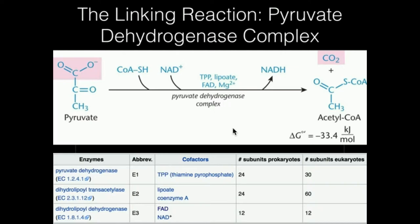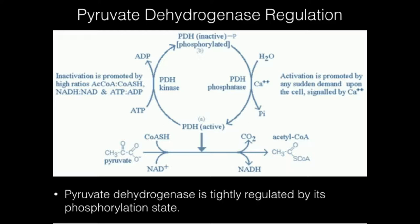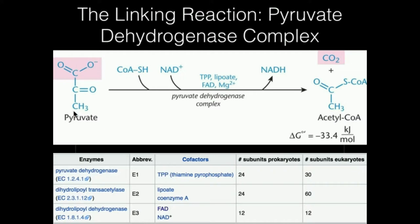It turns out that pyruvate dehydrogenase is both allosterically regulated and covalently regulated. The allosteric regulation we'll talk about in another video. We're going to talk only about the covalent regulation here. But first I want to mention why the logic makes sense to very tightly regulate this particular enzyme. You're generating the central coenzyme acetyl-CoA. Acetyl-CoA has many different fates — the obvious fate is that it's used in the TCA cycle, but there are also other reactions such as ketone body synthesis, steroid synthesis, and isoprenoids in general. It's used for lipid biosynthesis. There are a lot of different uses and ways we can siphon off this acetyl-CoA, so it makes sense to regulate this step because this is the step that's primarily producing it.